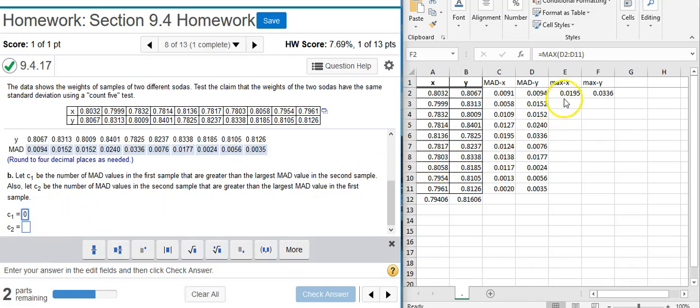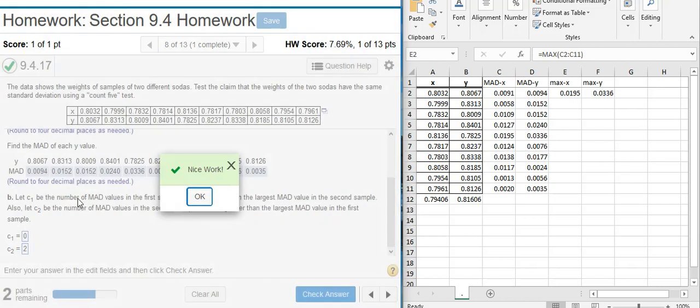I'll do the same thing with C2. I'm going to come here and use the maximum value for the X's. And I'm going to look at the MADs values for the Y and figure out how many are greater. So this one is not greater. This one's not greater. This one's not greater. This one's greater. So I've got 1, 2, looks like it's going to be 2. Nice work!